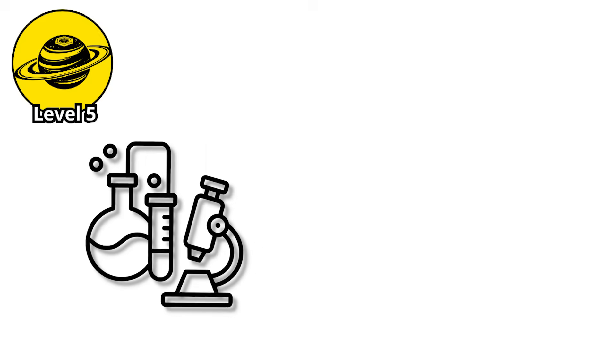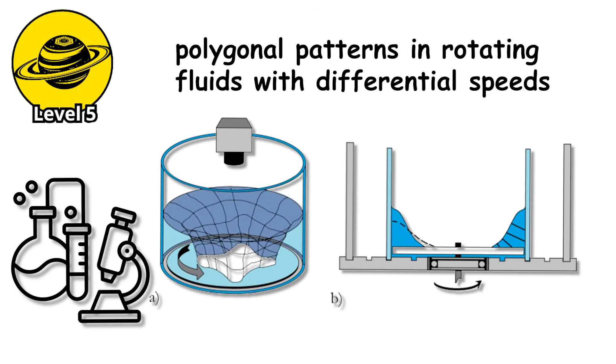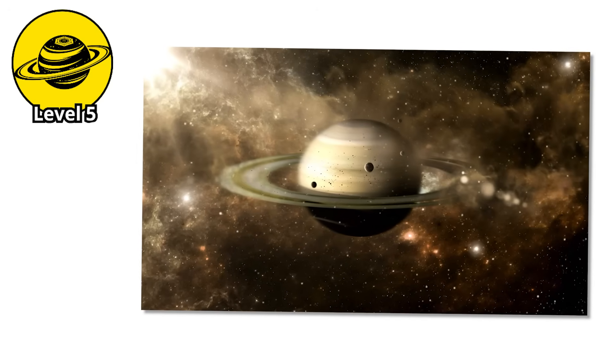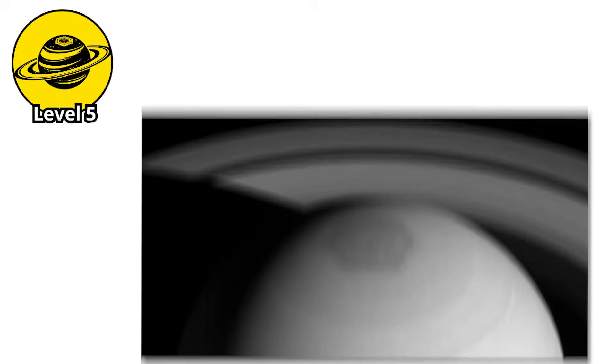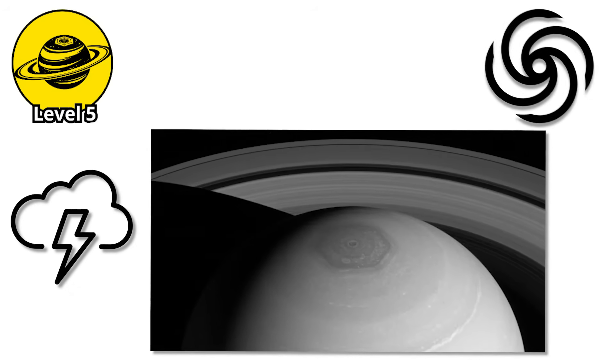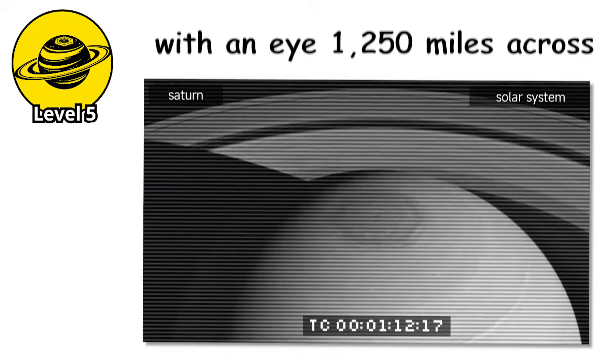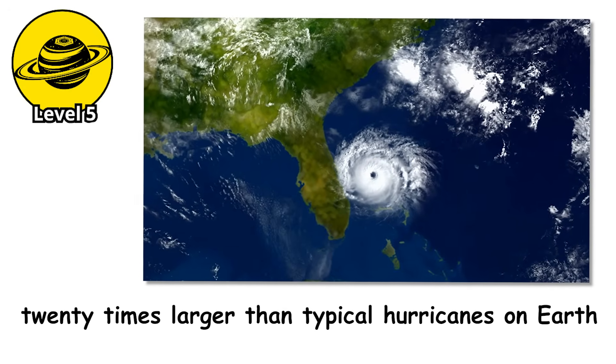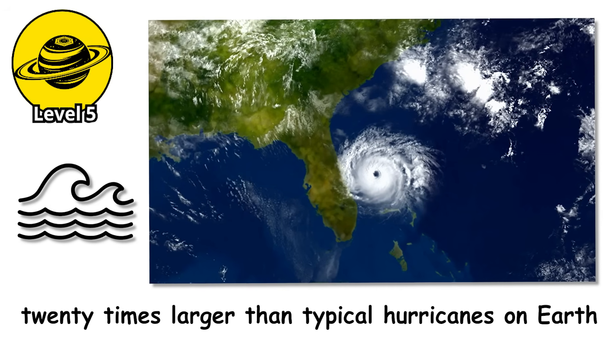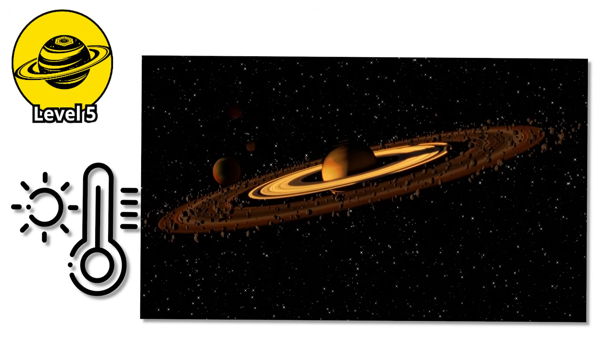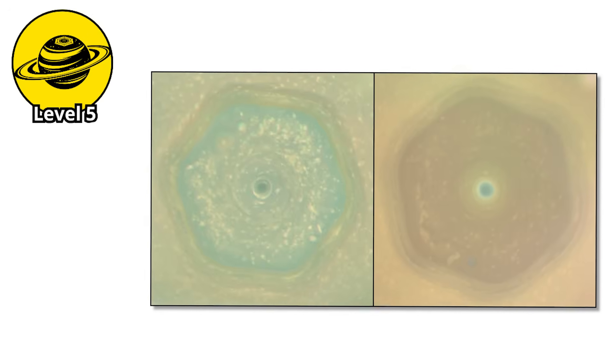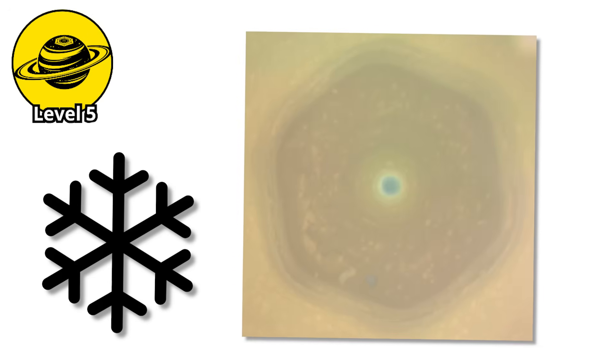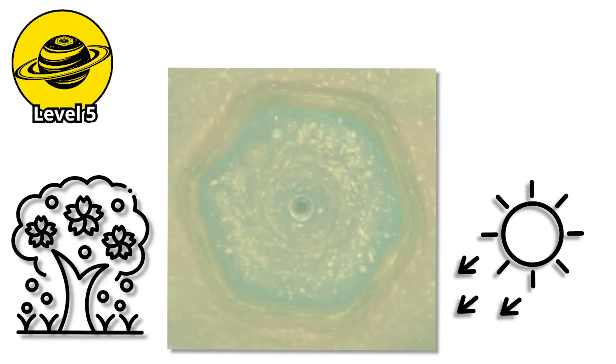It's like the universe decided to draw with a ruler. At the center of the hexagon sits another storm, a massive hurricane-like vortex with an eye 1,250 miles across, 20 times larger than typical hurricanes on Earth. Unlike Earth's hurricanes, which draw energy from warm ocean water, this storm is powered by Saturn's internal heat, and it's locked to the pole, spinning endlessly without moving. The hexagon changes color seasonally as Saturn orbits the Sun. During northern winter, it's golden. As spring arrives and sunlight hits the pole, it turns blue.